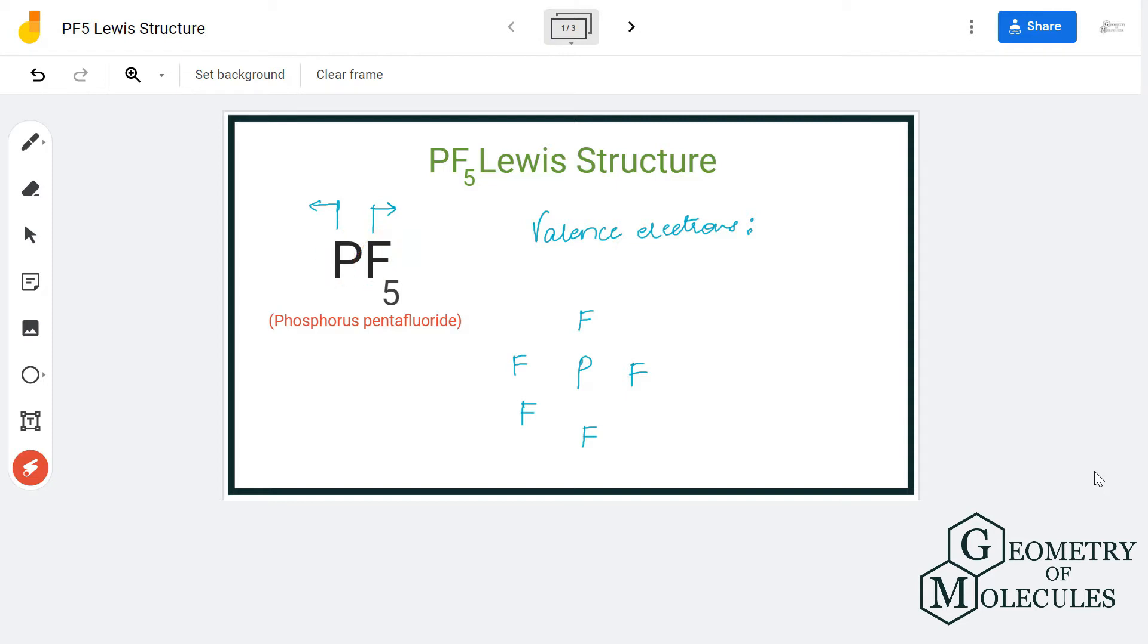To determine its Lewis structure, we will first look at the total number of valence electrons. Phosphorus has five valence electrons in its outer shell, and fluorine has seven valence electrons. Since there are five fluorine atoms, we multiply by five, giving us a total of 40 valence electrons for PF5.